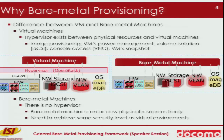There is a big difference between bare-metal and virtual machines. In case of virtual machines, there is a hypervisor between physical resources and virtual machines. But in case of bare-metal machines, there is no hypervisor, so bare-metal machines can access physical resources freely. Therefore, it needs to achieve the same security level as a virtual environment.